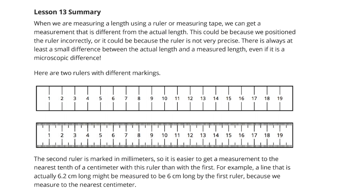Here are two rulers with different markings. You can see the top ruler is in centimeters, the second ruler is in millimeters, and so that second ruler is easier to get a measurement to the nearest tenth of a centimeter than the first. For example, a line that is actually 6.2 centimeters long might be measured to be 6 centimeters long by the first ruler, so you'd be off by 0.2 of a centimeter because of that measurement error because your tool wasn't precise enough.